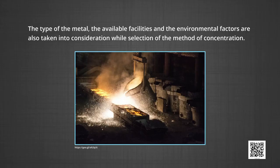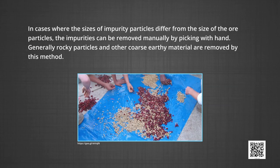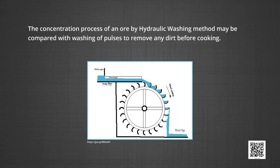The type of metal, the available facilities and environmental factors are also taken into consideration while selecting the method of concentration. Some of the important procedures are hand picking — the simplest method, comparable to cleaning pulses in the kitchen. In cases where the sizes of impurity particles differ from the ore particle, impurities can be removed manually. Rocky particles and coarse earthy material are removed by this method. Next is hydraulic washing, comparable to washing pulses to remove dirt before cooking.